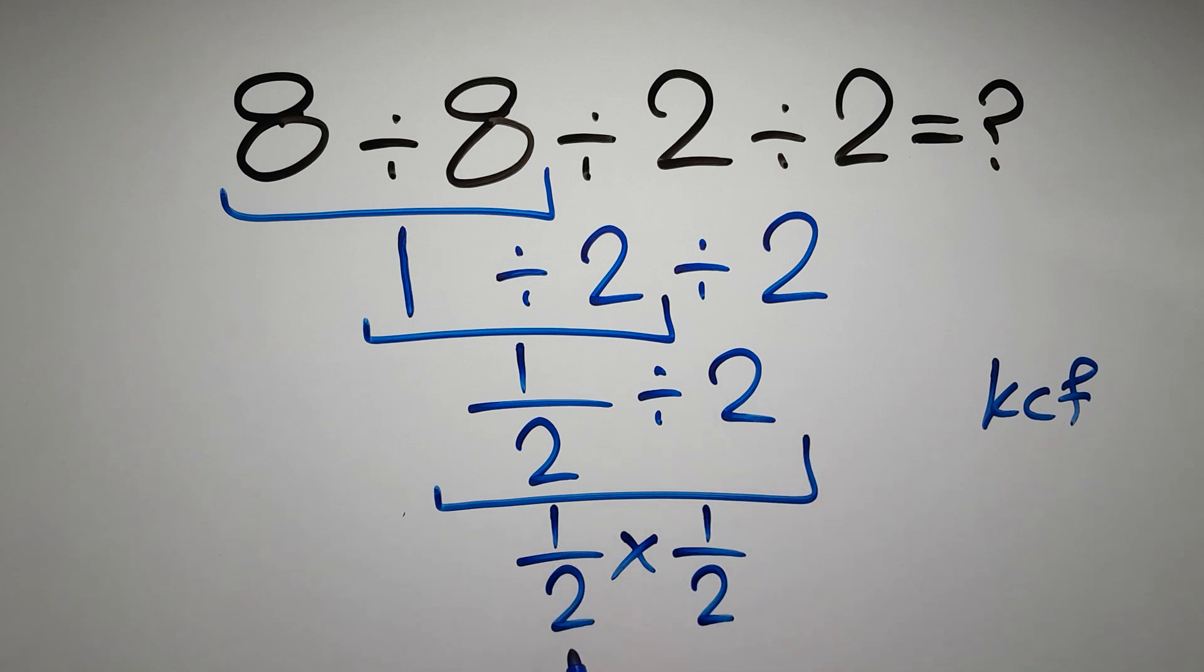So we have 1 over 2 times 1 over 2, which equals: 1 times 1 gives us 1, and 2 times 2 equals 4. So we have 1 over 4.